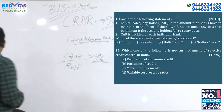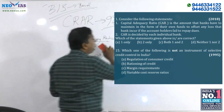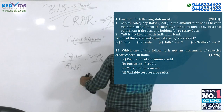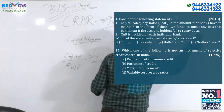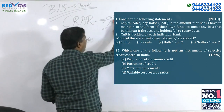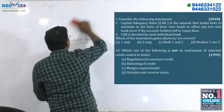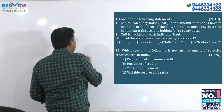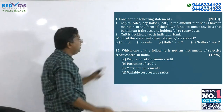A 2018 exam question asked: 'Capital adequacy ratio is the amount that banks have to maintain in the form of their own funds to offset any loss if account holders fail to repay dues.' That is a correct statement. The second statement — that it is decided by each individual bank — is incorrect because in India it is decided by RBI. So only one statement is correct.